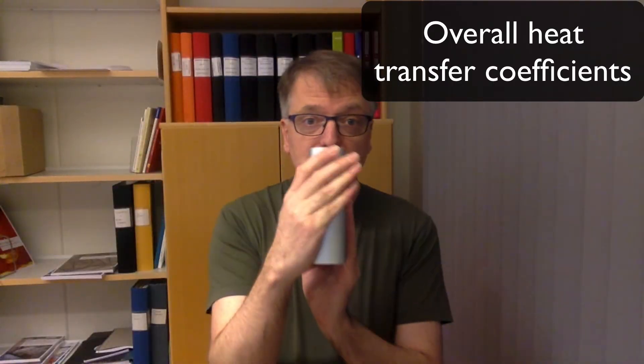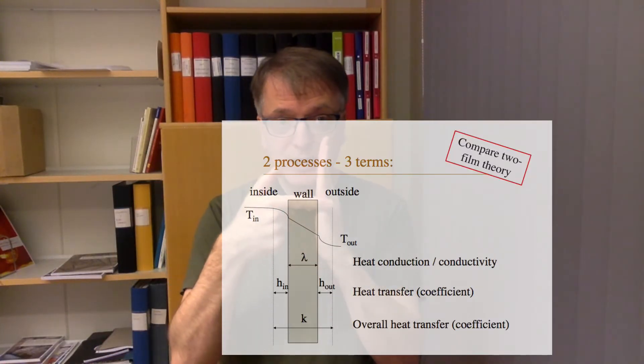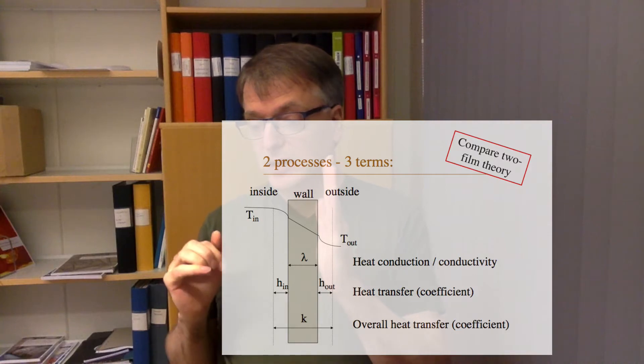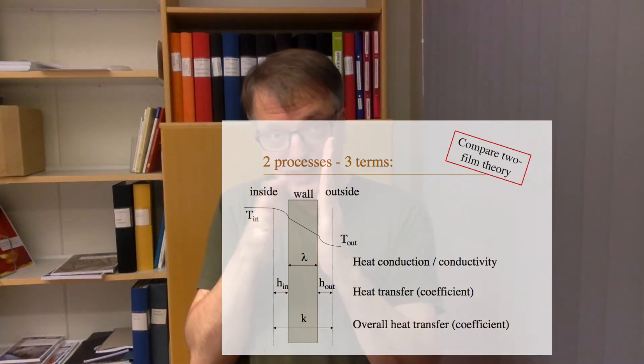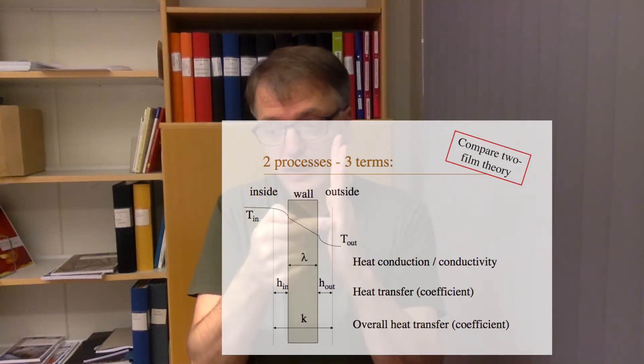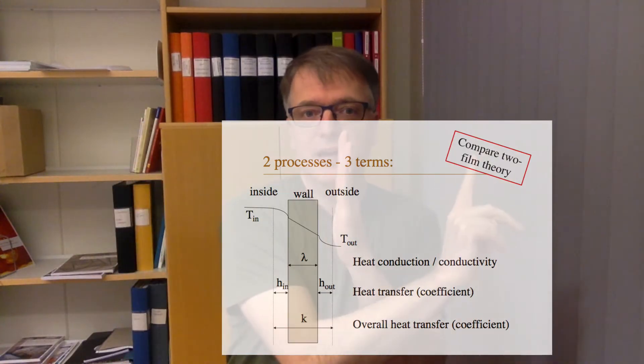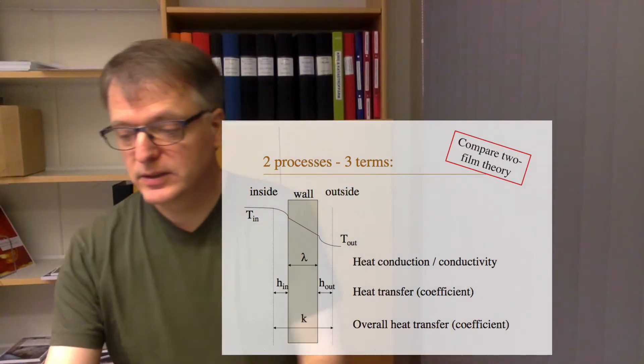Now, when talking about a wall — with one temperature on one side and another on the other side — we need to calculate heat transfer all the way through. There are two different processes: heat transfer to the wall (convection), conduction inside the wall, and heat transfer on the other side. We talk about heat transfer coefficients for what happens in the air or fluid, heat conductivity inside the wall, and an overall heat transfer coefficient K for what takes us from one side to the other.